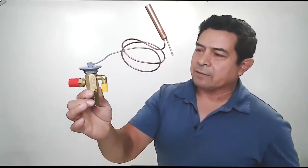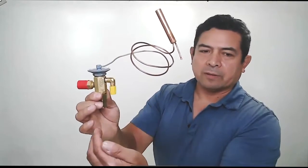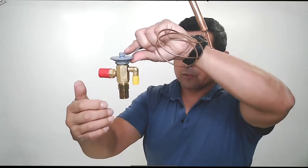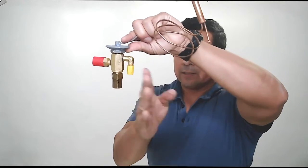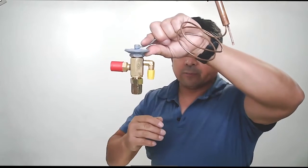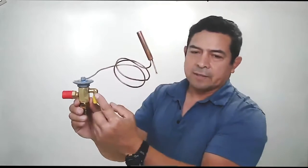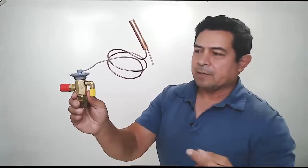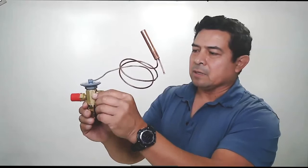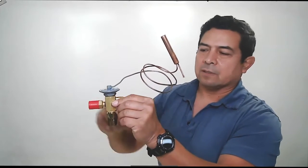Now what this valve is going to do is create a pressure drop right there. Everything on this side is going to be high pressure. On that side, it's going to be low pressure. We're going to connect this to the liquid line that comes in here, and this is going to be connected over to the evaporator.